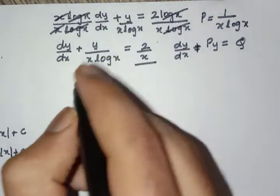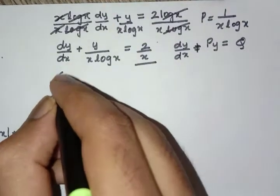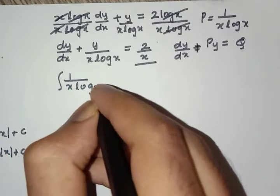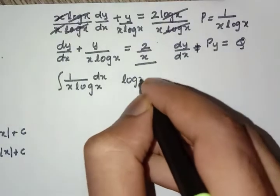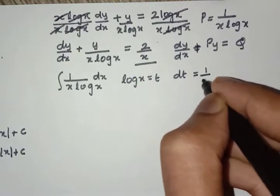All right, so let us find integral 1 by x log x dx. Let us consider log x is equal to t, which means dt is equal to 1 by x dx.